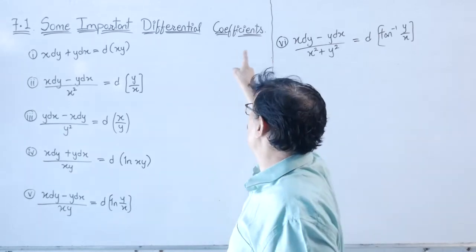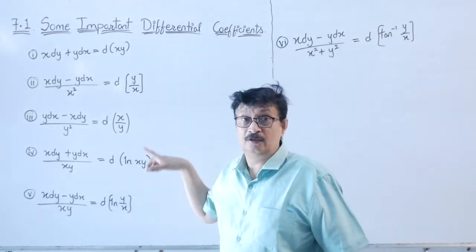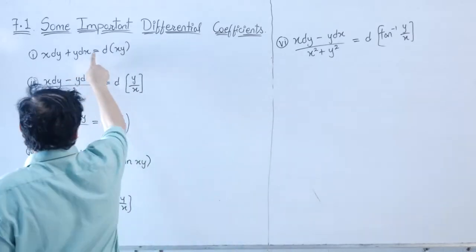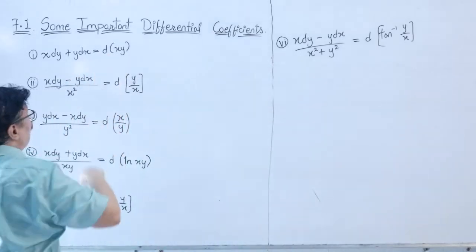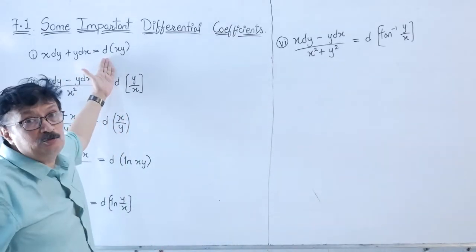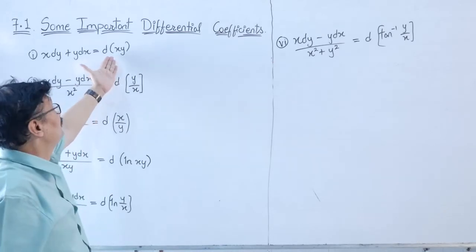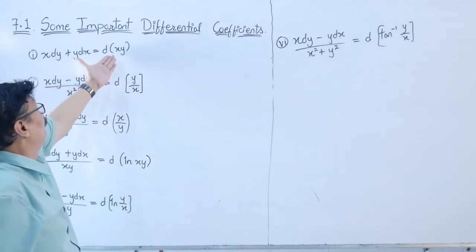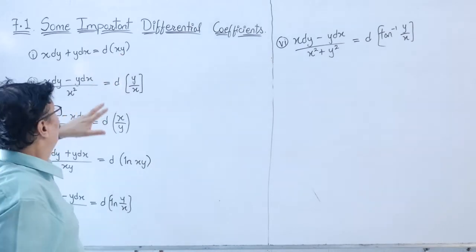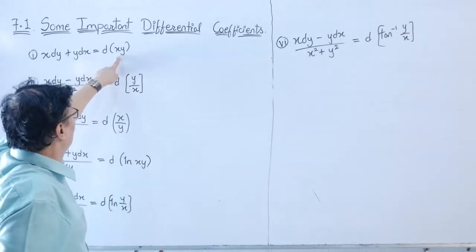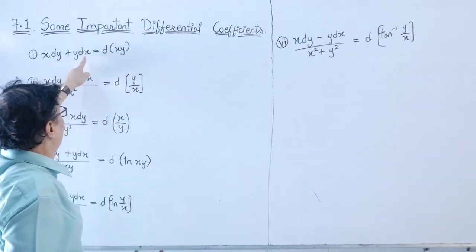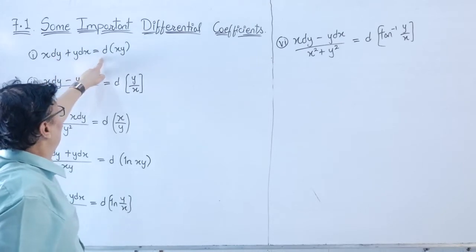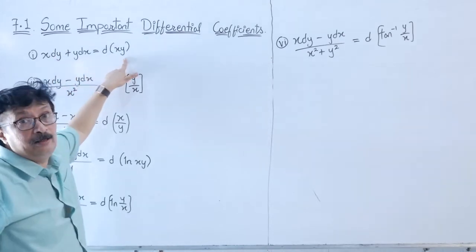Some important differential coefficients to remember: First, x·dy + y·dx = d(xy), which is simply the product rule of differentiation. Conversely, when you see x·dy + y·dx, it equals d(xy), and integrating gives xy.